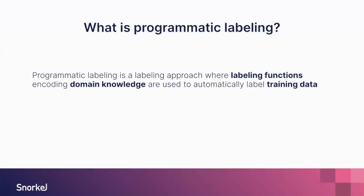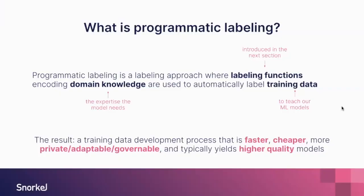Given all these challenges with manual labeling, I want to discuss programmatic labeling. Programmatic labeling is an approach where labeling functions encode domain knowledge — the expertise the model needs — and are used to automatically label training data at scale. We really need human expertise in the loop to create these functions, which are then applied at scale. The result is a training data development process that is faster, cheaper, reproducible, easily adaptable, private, governable, and typically yields a higher quality model.